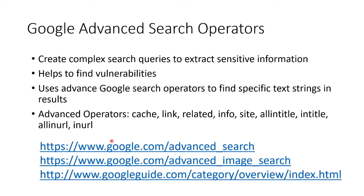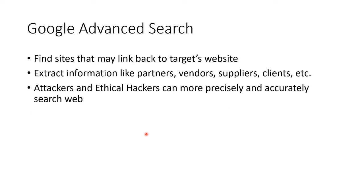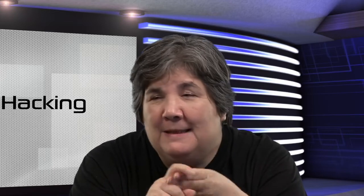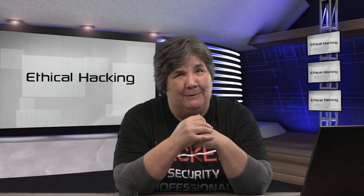In the activity, we're going to actually do some Google dorking. You don't have to know how to do it because there's a great place we can go that will do it for you — you can learn by their examples. We'll find sites that link back to a target's website, getting information like their partners, vendors, suppliers, and clients. Both attackers and ethical hackers can use this. You'll find spreadsheets, Word documents, PDFs, lists of social security numbers, passwords, and network documents — all sorts of stuff that never should have made it onto the web.